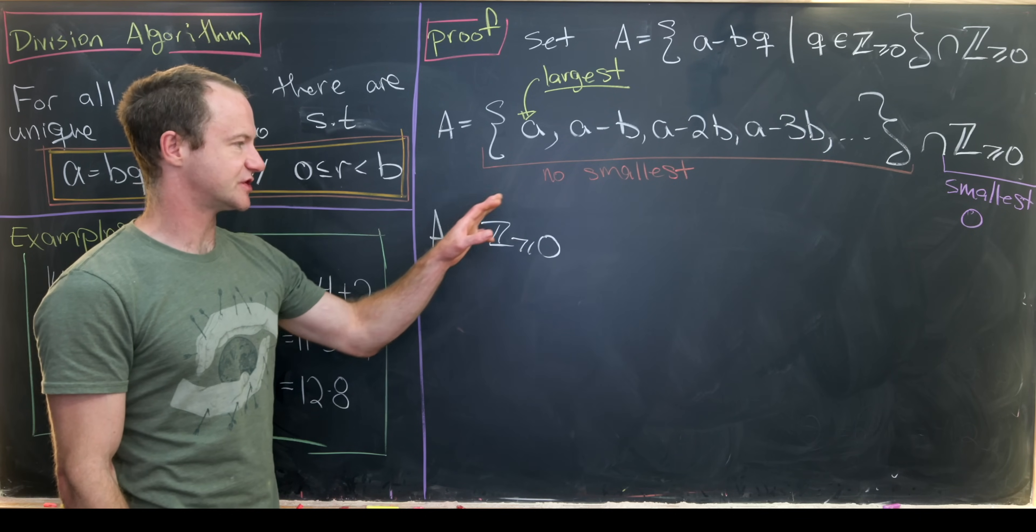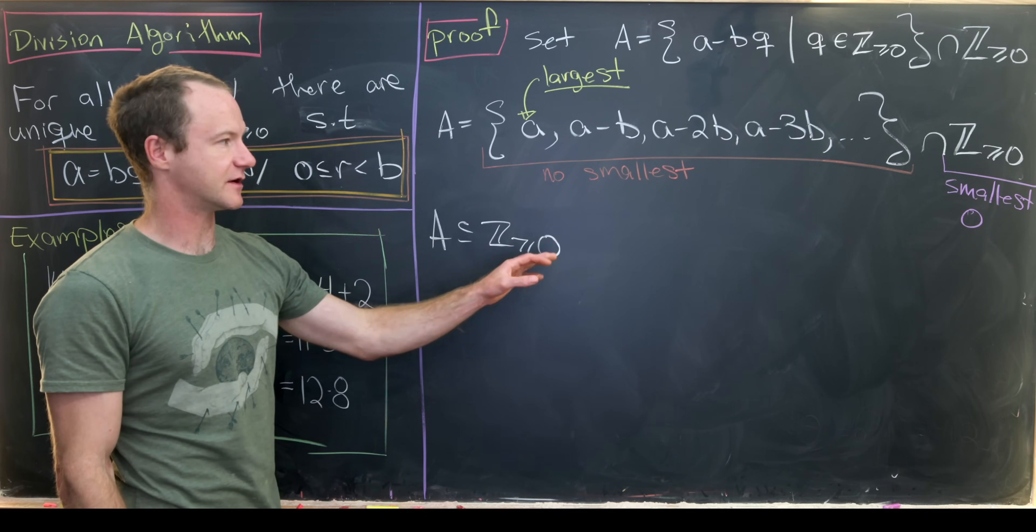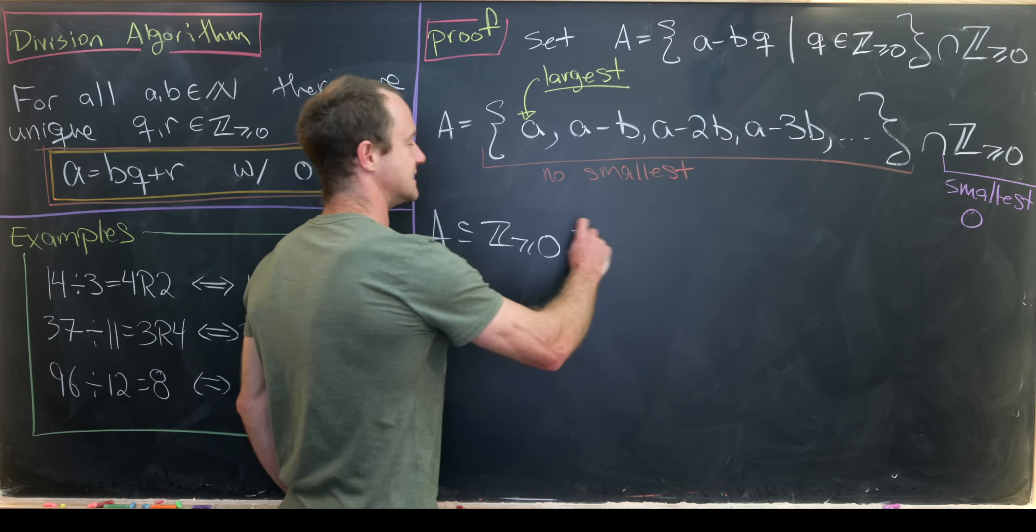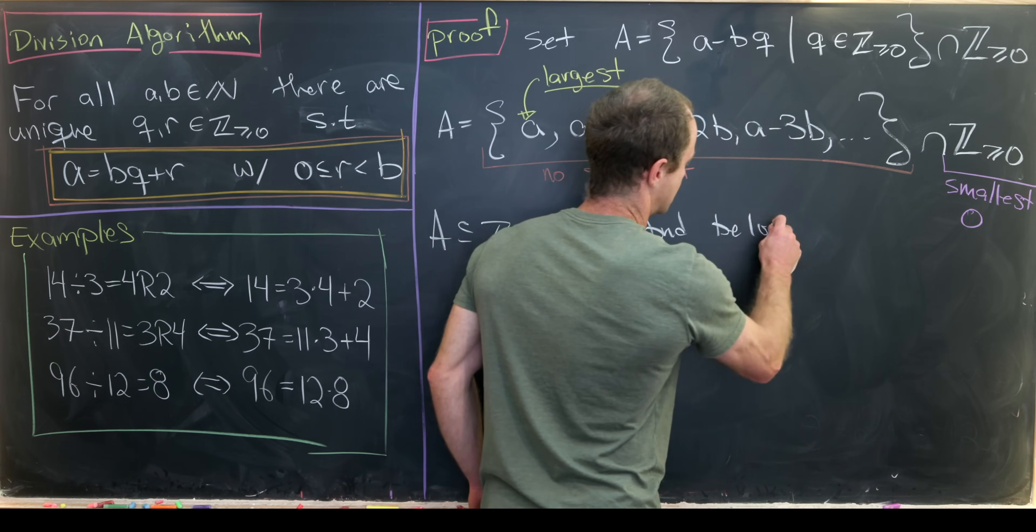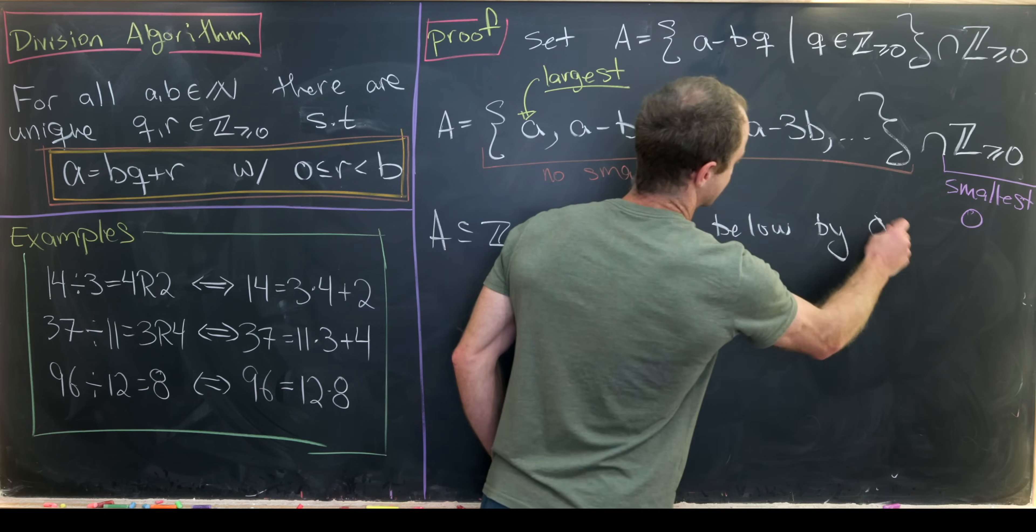But then the non-negative integers are bounded below—well, they're bounded below by 0. That means A is bounded below by 0.